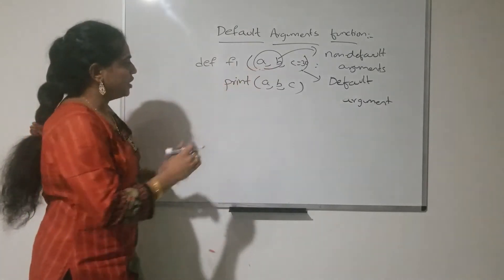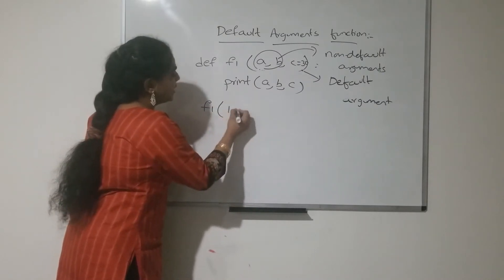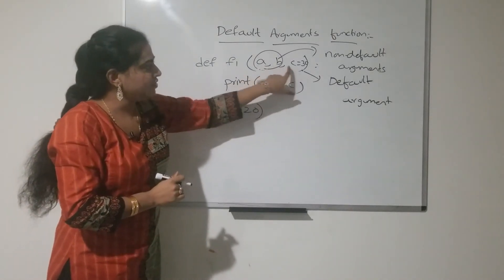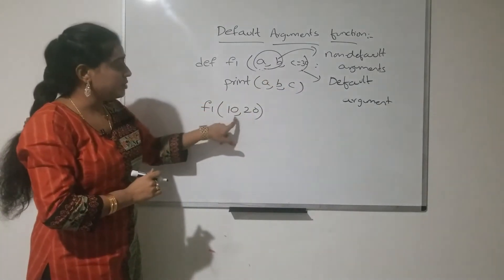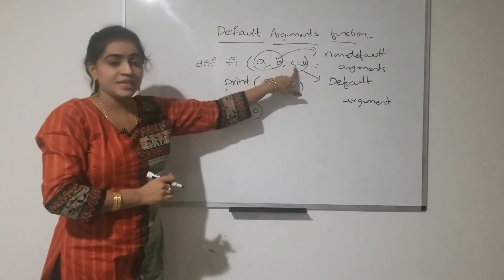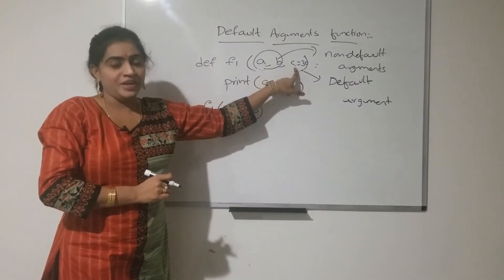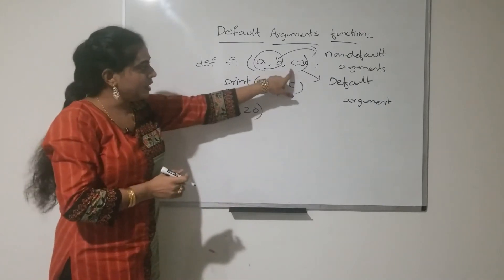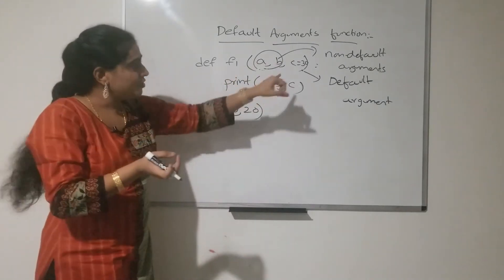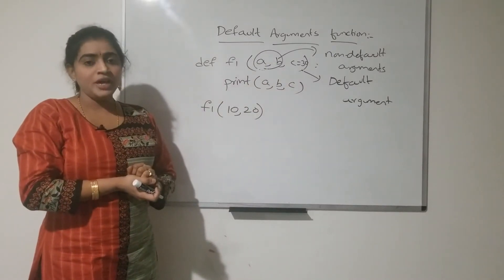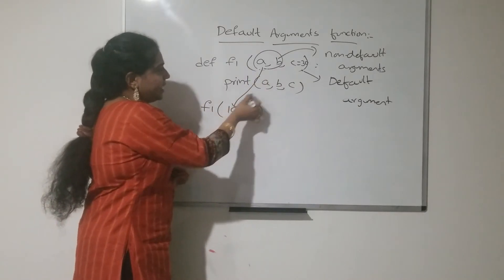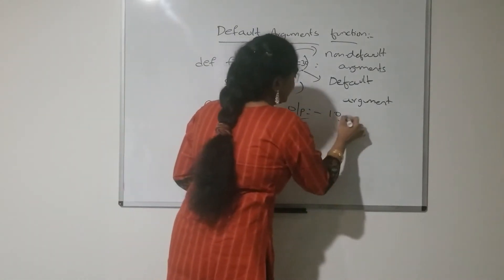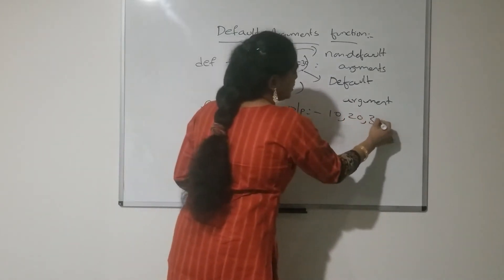Here in my function definition I have 3 variables, and now I am making a function call f1(10, 20). In the function call I am passing only 2 variables because the third variable is a default argument — no need to pass it since the value is already assigned. So a is assigned 10, b is assigned 20, and c takes the default value of 30. The output will be 10, 20, 30.